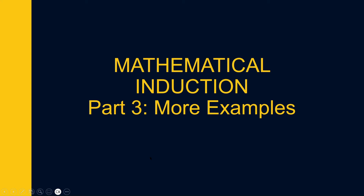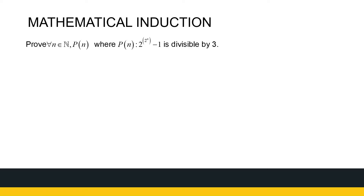Let's look at two more examples on mathematical induction. These look a little bit different than the ones we've seen already. The first one: prove that for all natural numbers n, P(n) is true, where P(n) states that 2 to the power 2^n minus 1 is divisible by 3.